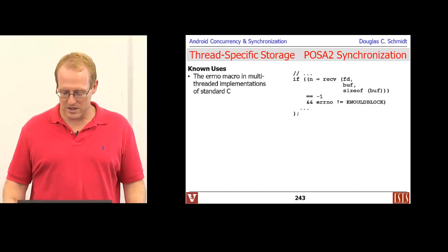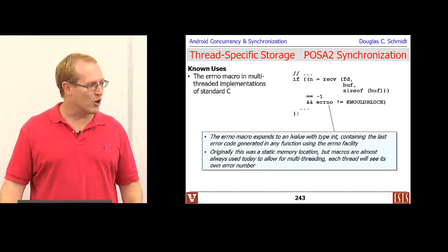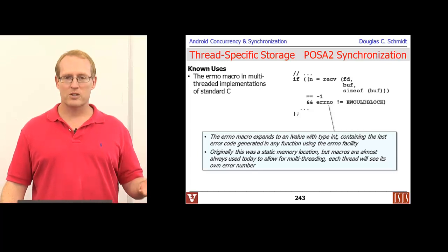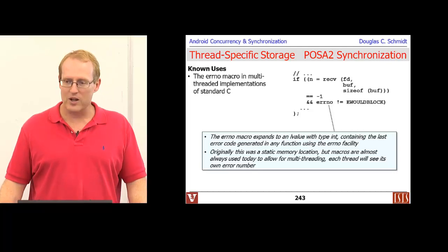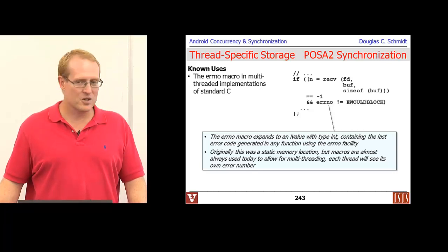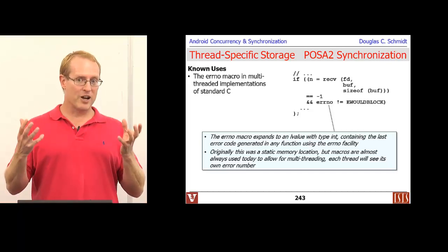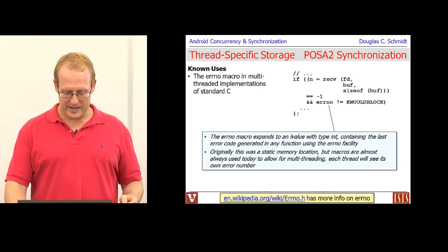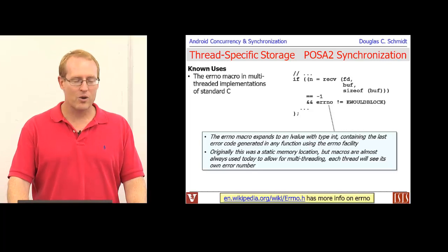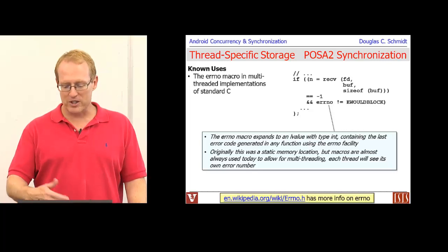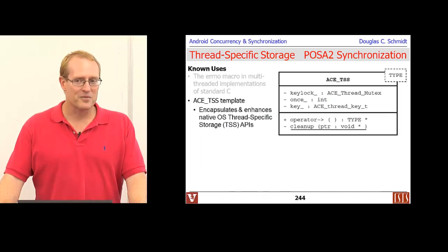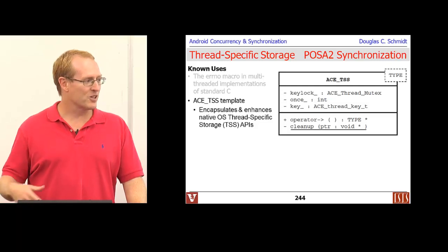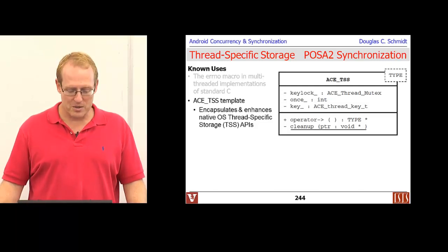Known uses include errno, which once multi-threading became popular was widely implemented as a macro that turns into a call to thread-specific operations, avoiding race conditions from sharing a global errno between threads. ACE has a particularly cool implementation of this pattern — the ACE-TSS class — since the pattern was originally based on what was done in ACE.